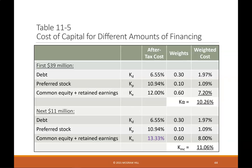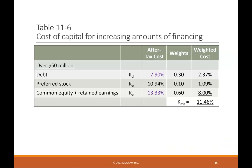Table 11-5 shows the cost of capital for different amounts of financing: for the first $39 million, the weighted average cost of capital is 10.26%. For the next $11 million, it is 11.06%. Table 11-6 shows that for financing over $50 million, the weighted average cost of capital is 11.46%.